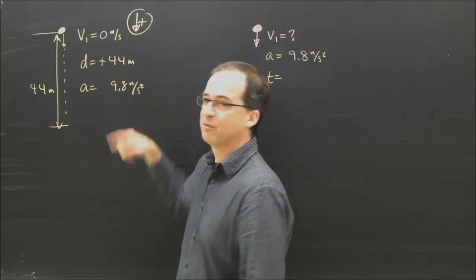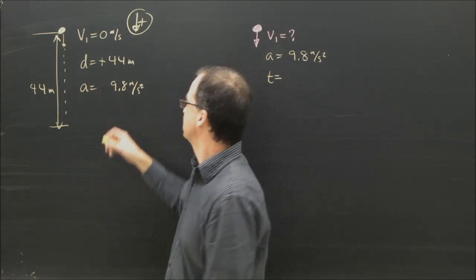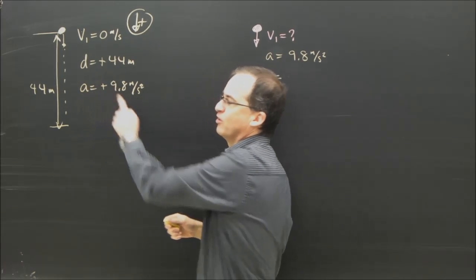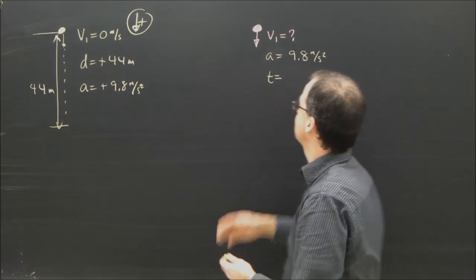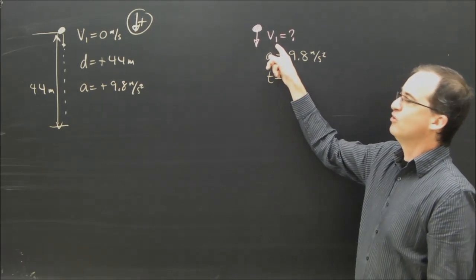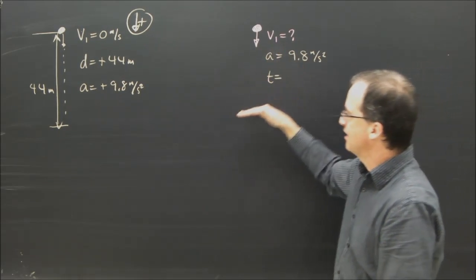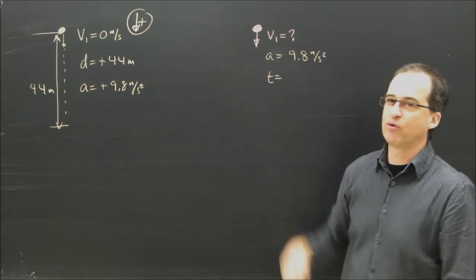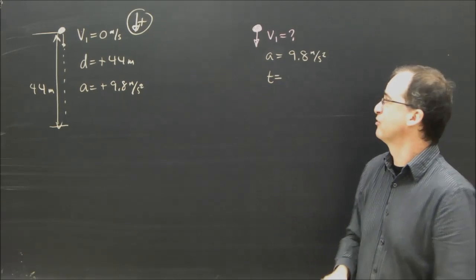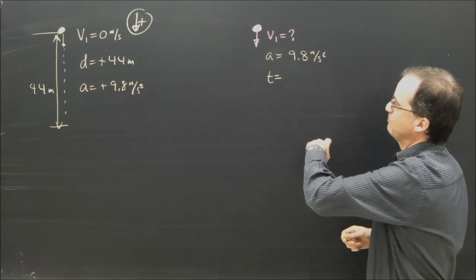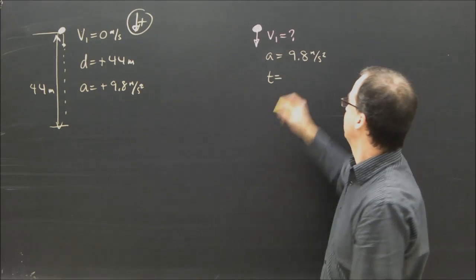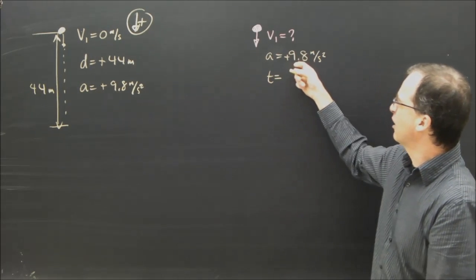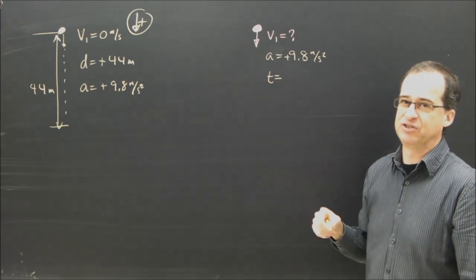Down is positive, the acceleration is down when somebody's falling, so down is positive — there we go. I can tell you anything you want to know about this ball. Now let's look at the second ball. The second ball, you're throwing it down and it has to hit the ground at the same time as this ball. Since it's falling the same 44 meters, you've got to give it some velocity for that to happen, and that's what we're looking for. The acceleration of that ball is 9.8 down, so it's also positive. And I've really only got one piece of information for this.